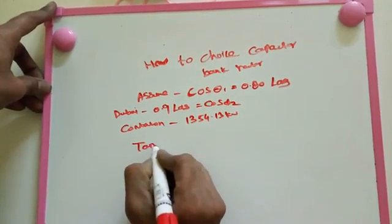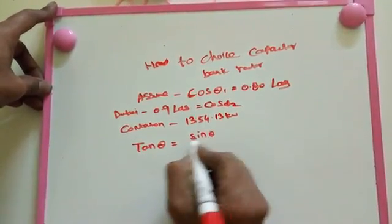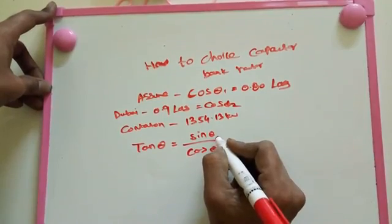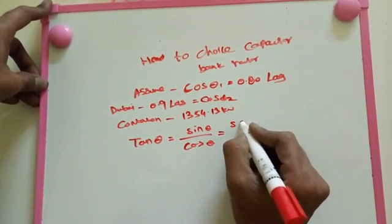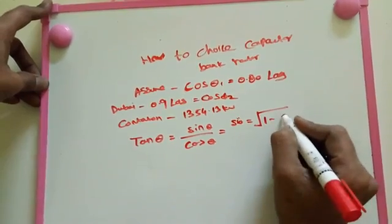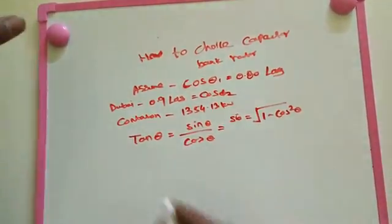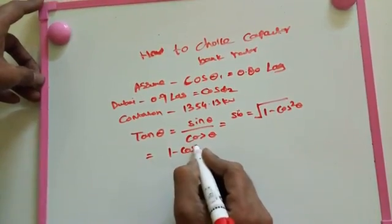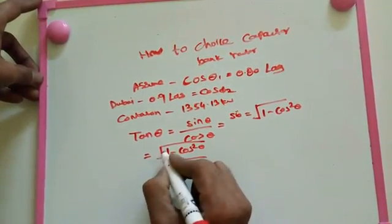Now, tan theta equals sin theta by cos theta. This is a simple mathematical formula. Sin theta equals the square root of 1 minus cos squared theta. So we replace: square root of 1 minus cos squared theta divided by cos theta.